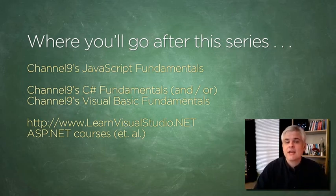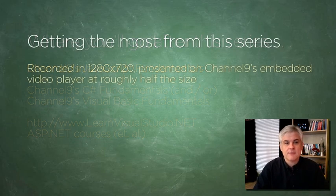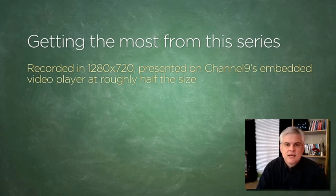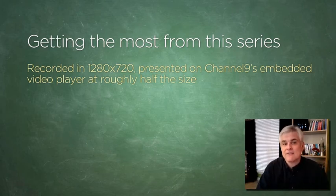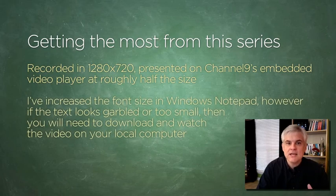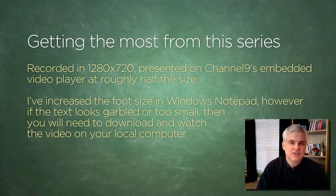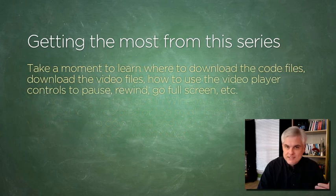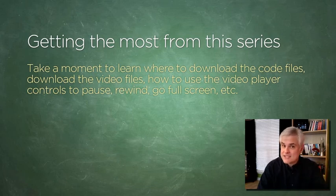I'll have more to say about where to go from here at the very end in Lesson 18. Before we get started, the videos on Channel 9 are presented somewhat smaller than how I originally record them, which is in high-def 1280 by 720. I'll increase the font size of the text I type in Notepad. If text seems obscured or difficult to read, it may have to do with the speed of your internet connection — in that case, you may want to download the videos to your computer first. Also, you should be able to watch full screen.